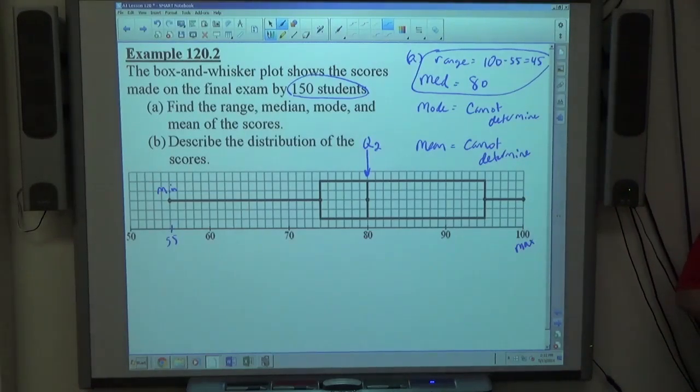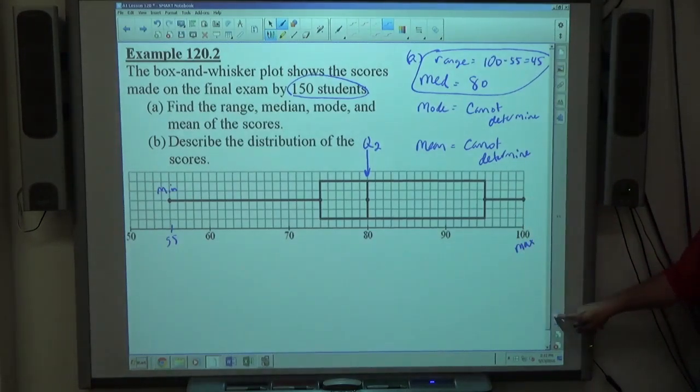Mode and mean are not possible to be found with it, unless you happen to have a list of the data too. If they gave us this along with a list of data, if it looked like here's a box and whisker plot, maybe.